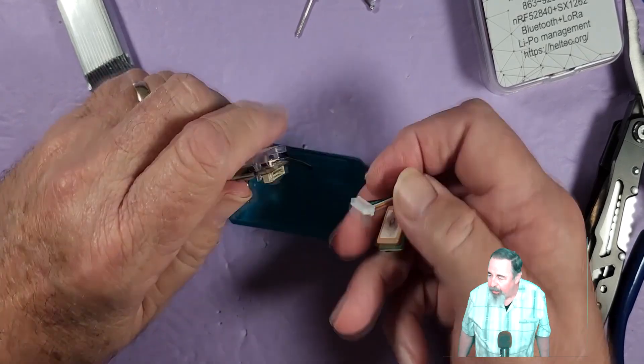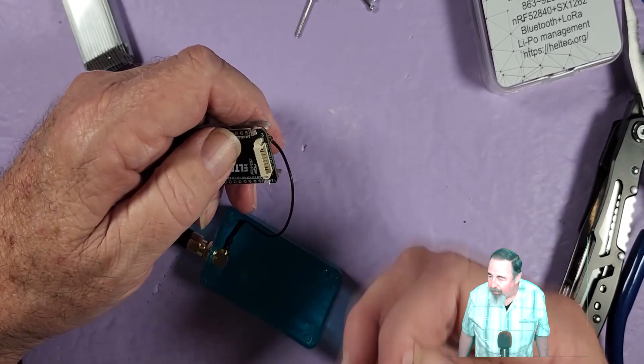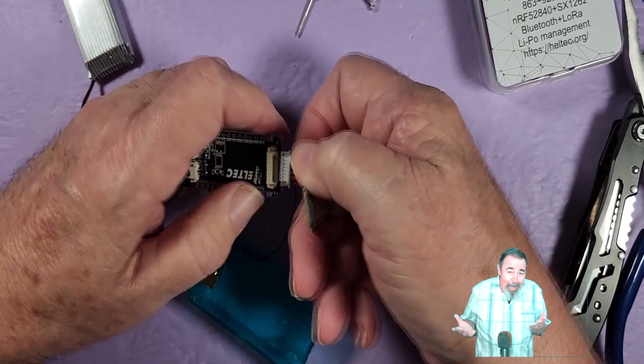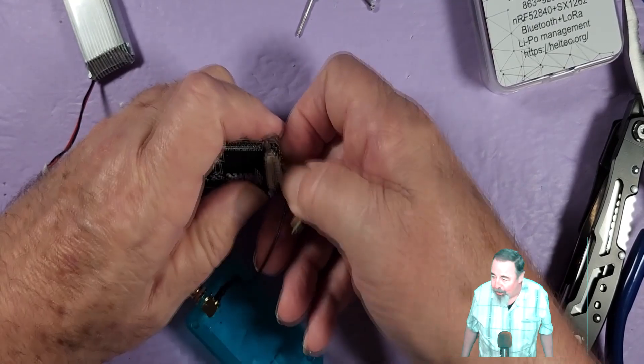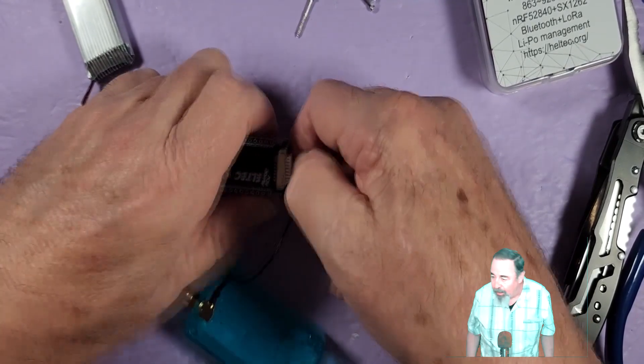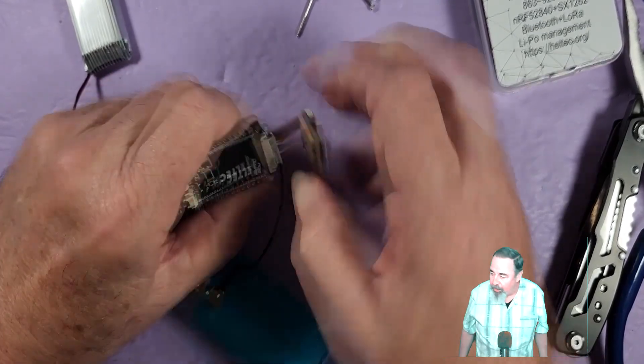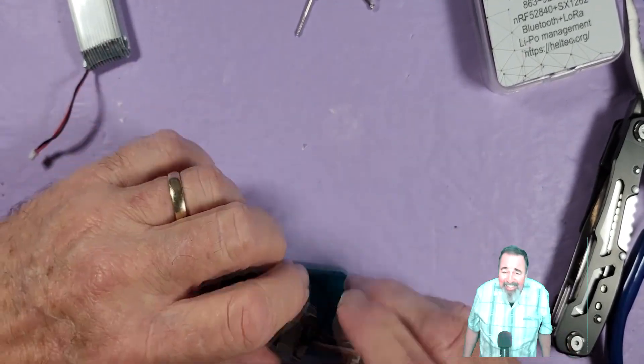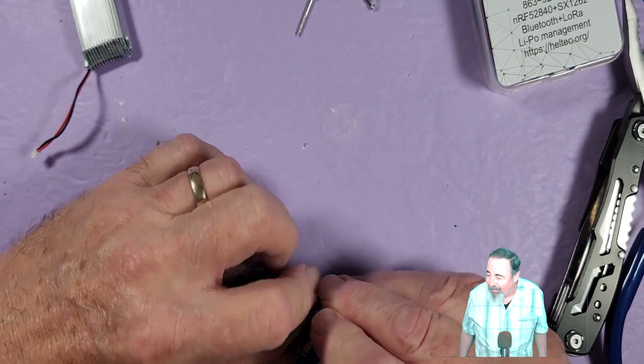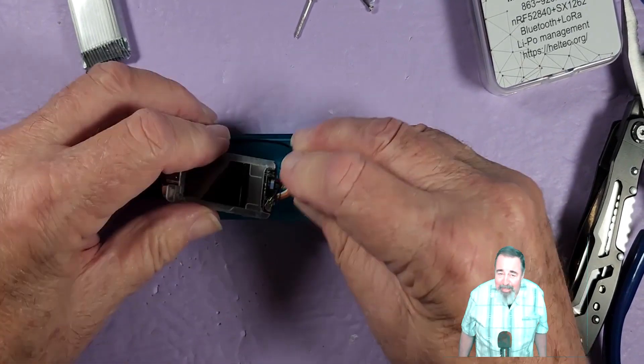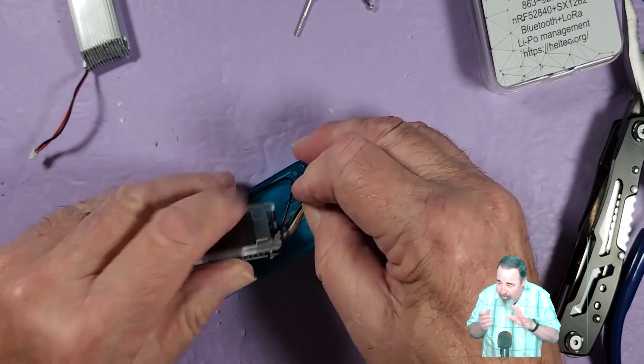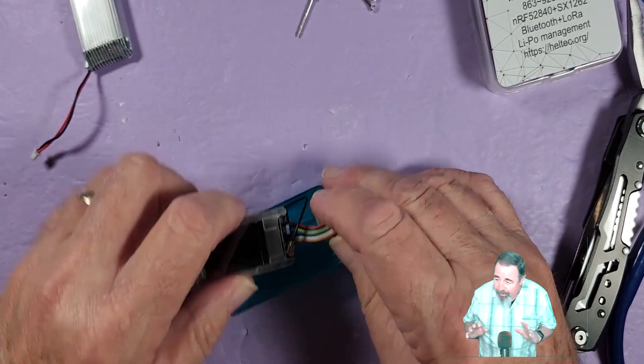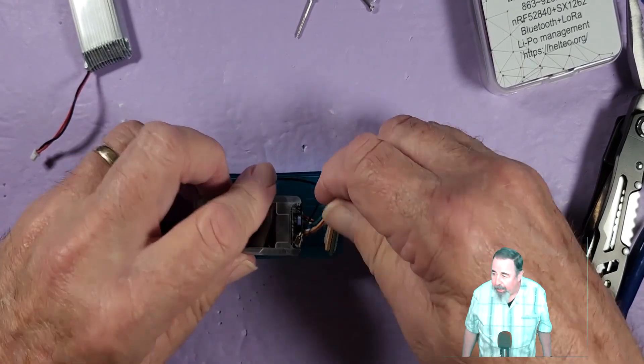I really struggled getting the GPS unit in here. This case is very, very compact. And I actually ordered another case and another GPS unit because I've got two of these T114 mesh nodes, and I just want to try it again and see if I can do it better. It's a struggle trying to get the wires folded. The problem is the battery, the wires, and getting everything in so that you can close the case.